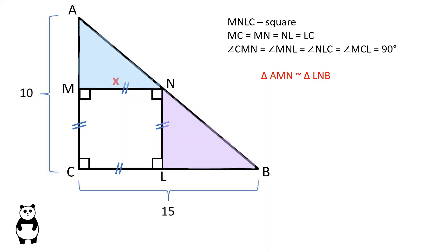The shaded triangles are similar because two pairs of corresponding angles are equal. Angle MNA is equal to angle LBN as corresponding angles because opposite sides of a square are parallel to each other. Angles AMN and NLB are both 90 degrees.